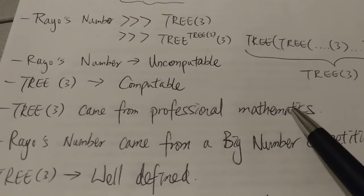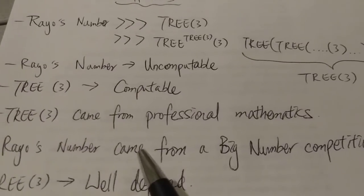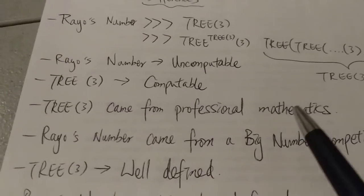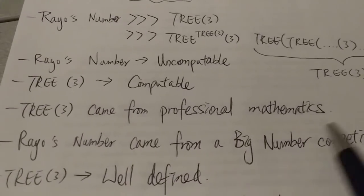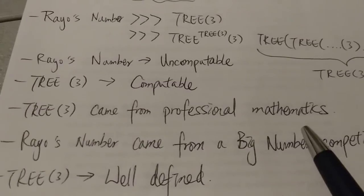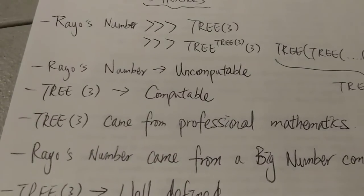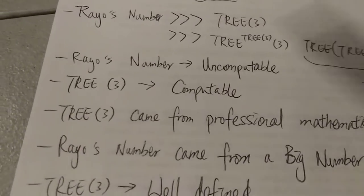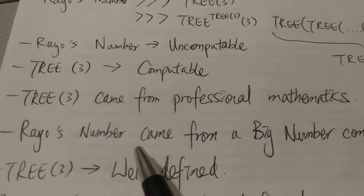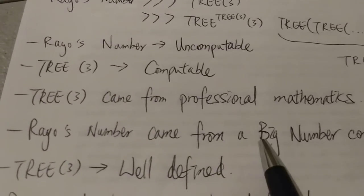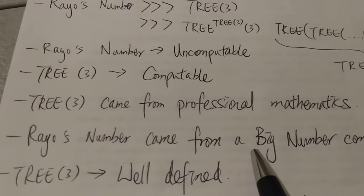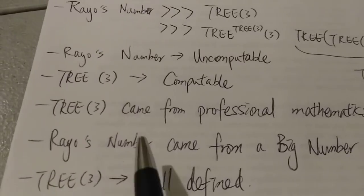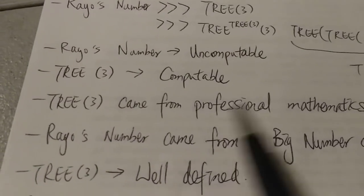So it's not related to any professional mathematics or it does not come from an actual mathematical problem. So I mean, if you're a mathematics enthusiast, you may not actually like Rayo's number. You like TREE(3) way more. It actually even came from an amateur—like Rayo, the person who came up with Rayo's number, is not even a mathematician. He's a philosopher.